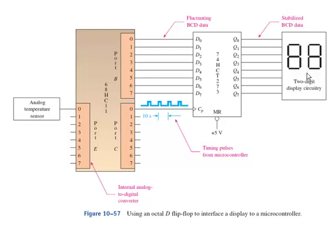So the microcontroller issues this string of pulses every 10 seconds, low to high, low to high, low to high. Every time this goes low to high, that's the trigger point applied to the CP. And whatever data happens to be on this fluctuating data bus right here, whatever happens to be there at that instant, that's what gets sent over to the queues. Thus, we have a stable display.